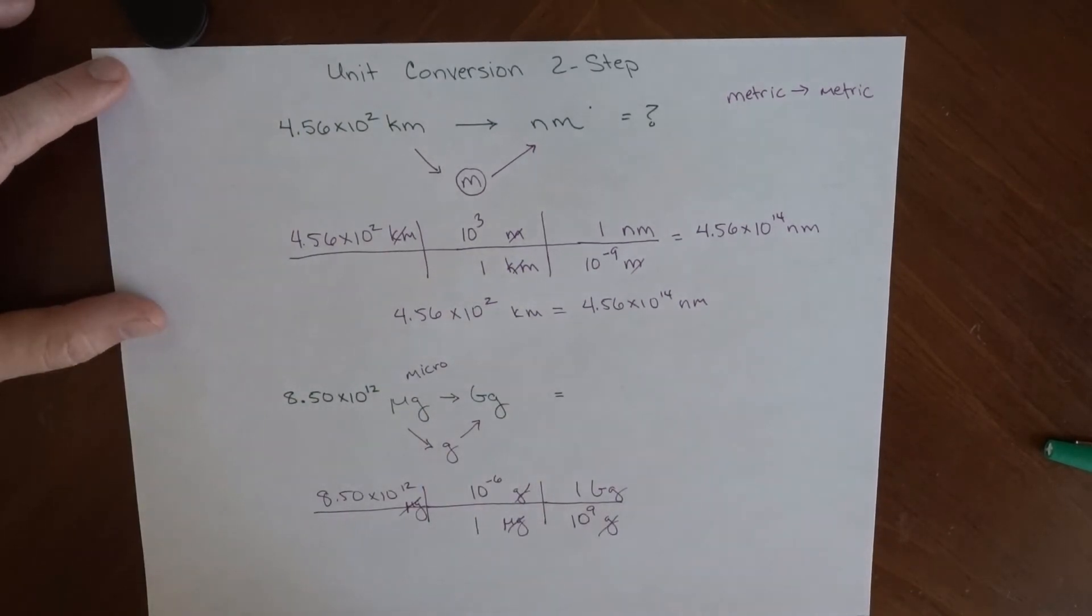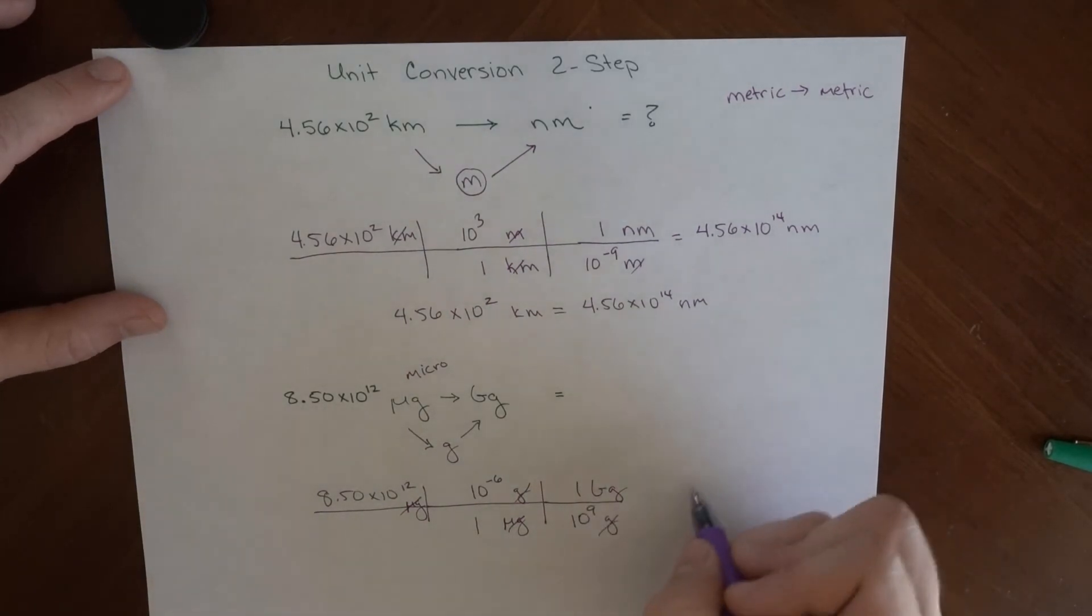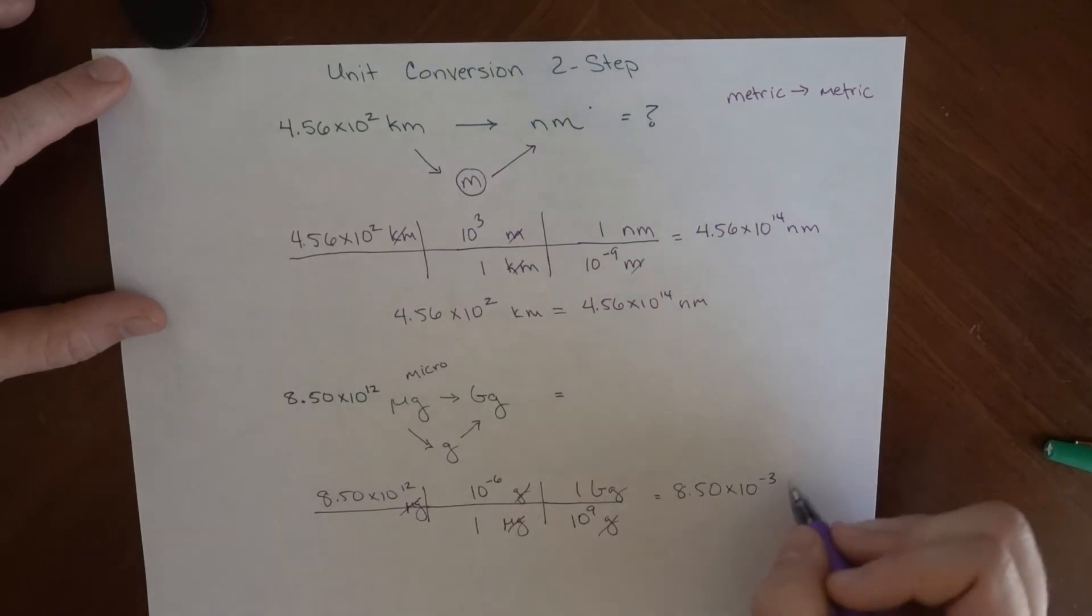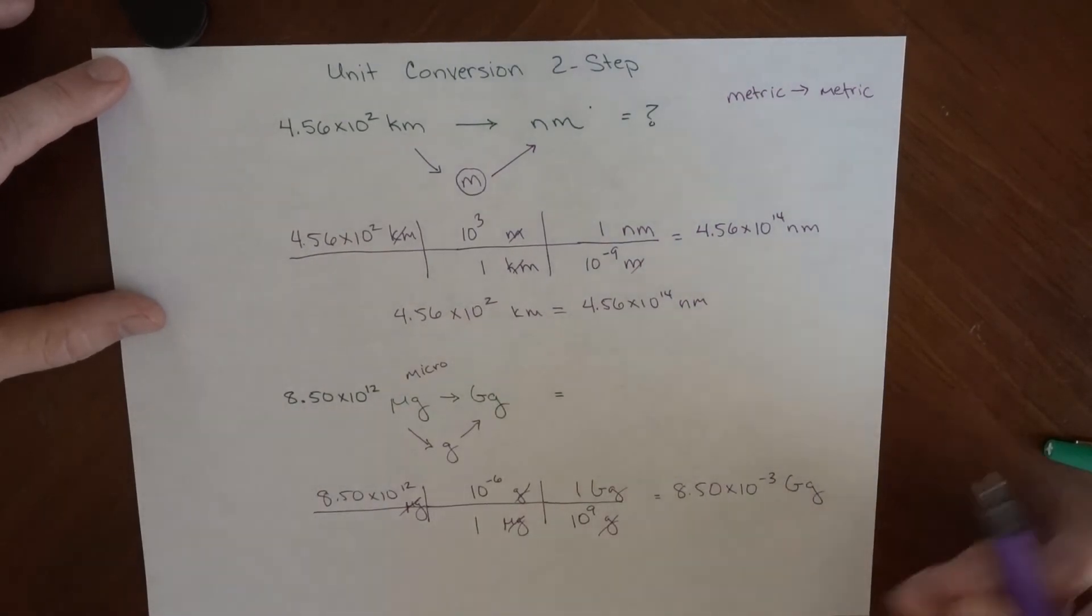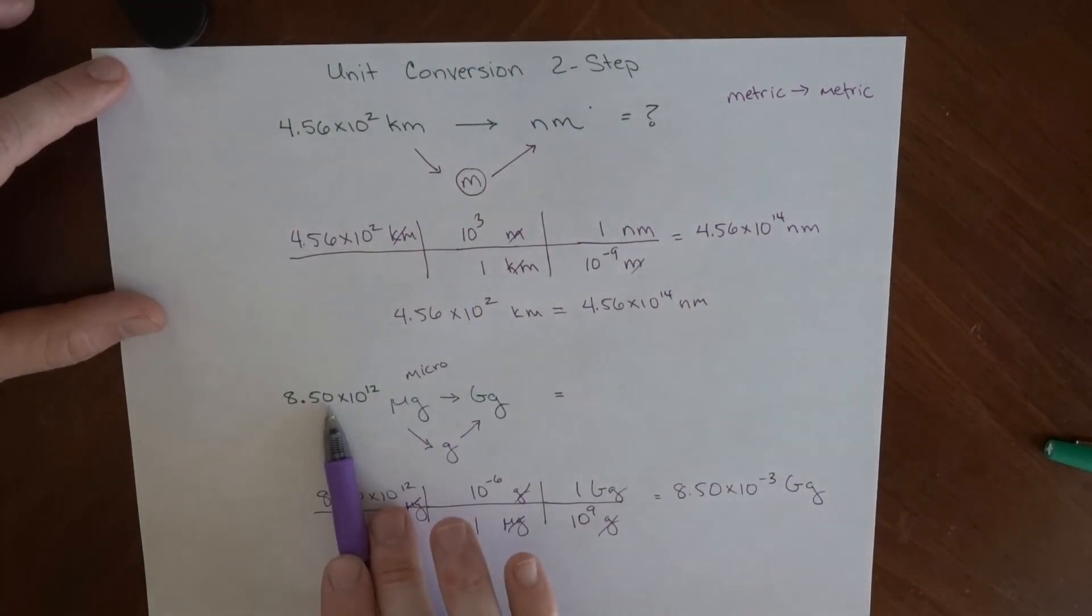And so this becomes 10 to the minus 15. So 8.50 times 10 to the minus 3 gigagrams. And again, this number of micrograms is equal to this number of gigagrams. One is not bigger or smaller than the other. They are identical.